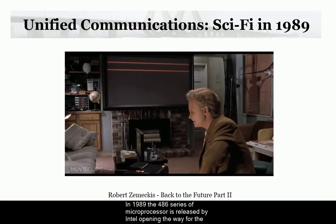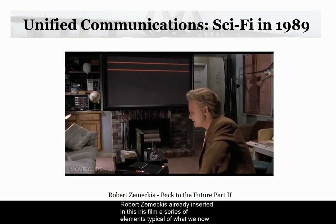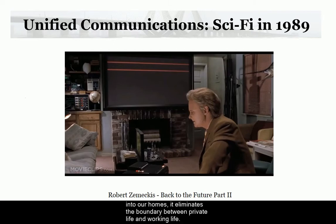In 1989, the 486 series of microprocessors was released by Intel, opening the way for the next generation of much more powerful PCs, and Microsoft released its Office Suite. Robert Zemeckis already inserted in his film a series of elements typical of what we now refer to as Unified Communications — communication comes directly into our homes, eliminating the boundary between private life and working life.